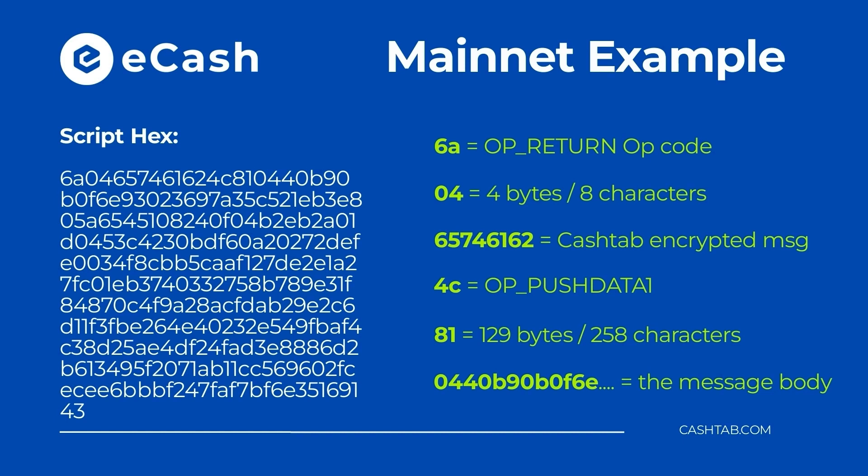The next byte of 4c indicates that the following byte provides the length of an upcoming message. The 81 then indicates this message is 129 bytes, or 258 characters, which is the exact length of the remaining characters in the script hex. This remaining string is extracted as the message and then subsequently parsed and decrypted within CashTab.